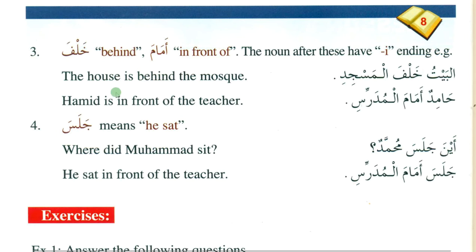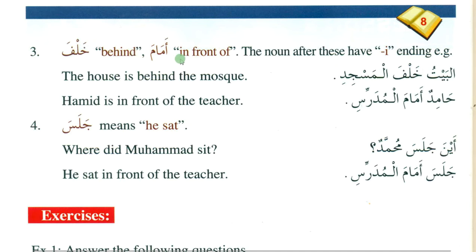Next we have the meanings of khalfa and amama. These two words act as mudaf, so the rules of mudaf apply to them and the following word automatically becomes mudaf ilayhi with kasra. Khalfa is acting as mudaf so masjid becomes mudaf ilayhi — majroor. The meaning of khalfa is 'behind' and amama is 'in front of' — memorize these meanings. The verb jalasa means 'he sat'.